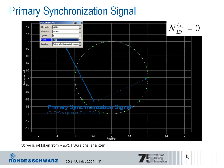Let's look at the two signals now. The type of signal used for the primary synchronization signal is a Zadoff-Chu sequence. Zadoff-Chu sequences are CAZAC sequences, where CAZAC stands for Constant Amplitude Zero Autocorrelation — the name already describes the characteristic of these sequences. With a constant amplitude, a low peak-to-average power ratio is achieved, whereas zero autocorrelation means a good time-domain behavior.